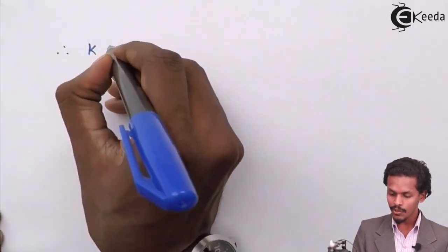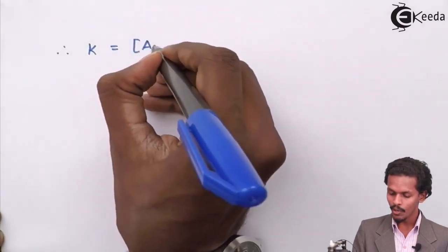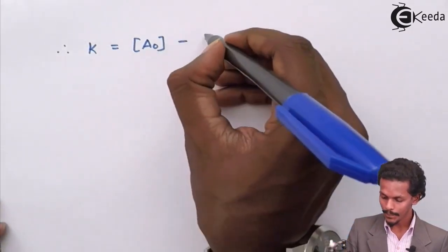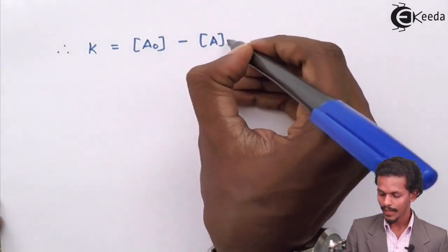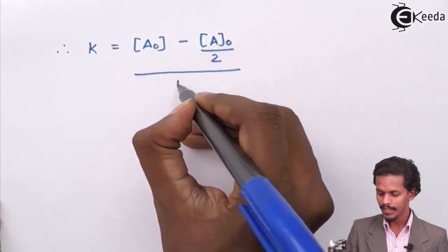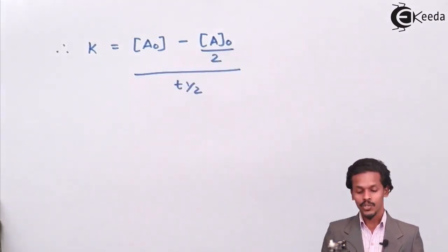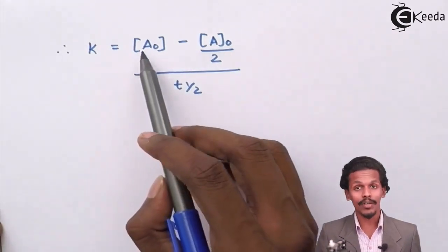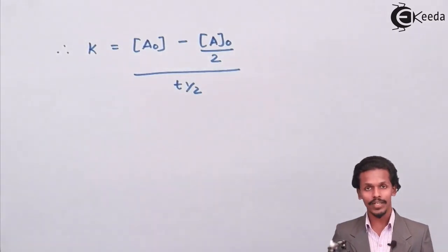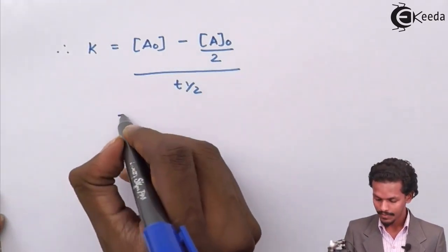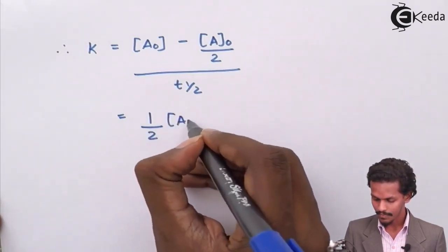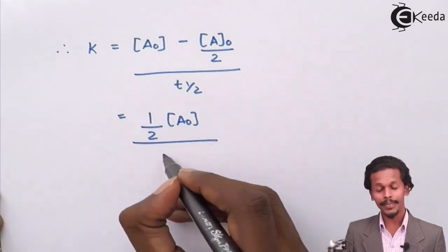Therefore K equals A0 minus, instead of AT we will write A0 divided by 2, the whole divided by T half. So one of A0 minus half of A0 is nothing but half of A0 itself, the whole divided by T half.